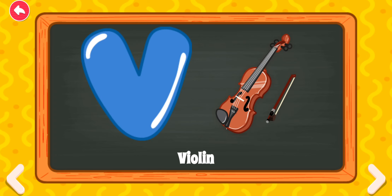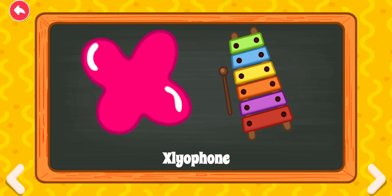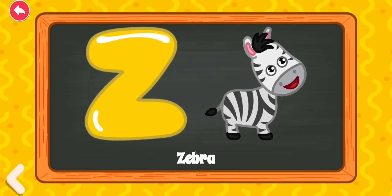V for violin. W for whale. X for xylophone. Y for yak. Z for zebra.